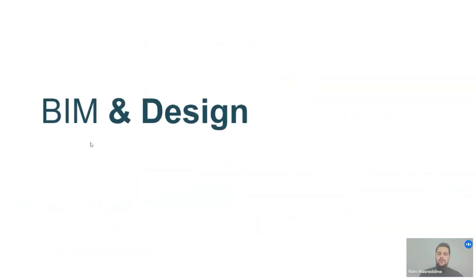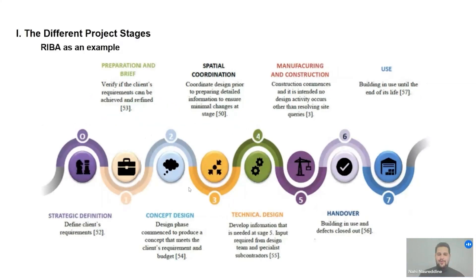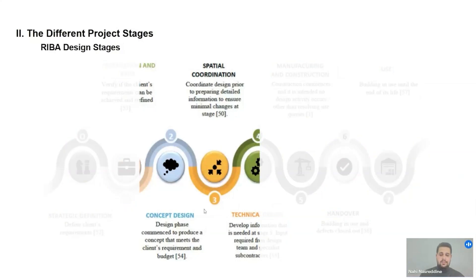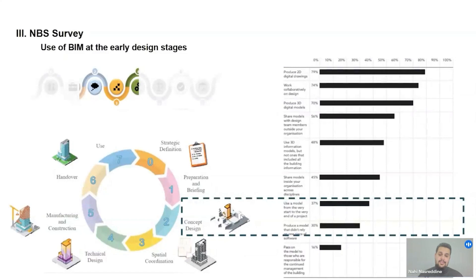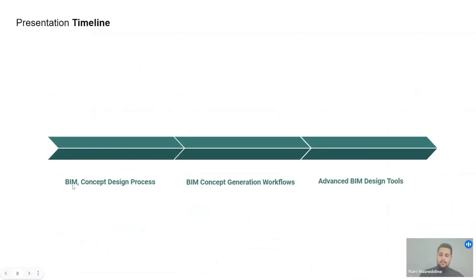Let's talk about BIM and how to use information to make outstanding designs. When working on a design, we always take into consideration that we are working on a cycle — on different project stages — where the design stages are three, starting from the concept design. A survey from the National BIM Standards showed that only 37% of architects use BIM at the concept stage. It's common to hear that BIM is different from design, or that you shouldn't use BIM when thinking about a design concept. But every design has to have a reason, and a reason comes from information. So first, I need information before thinking about a parameter, then transforming it into a design. Today we will be talking about BIM as a concept design process.